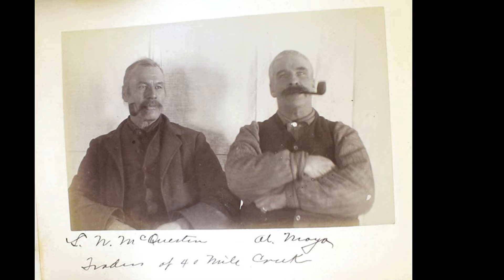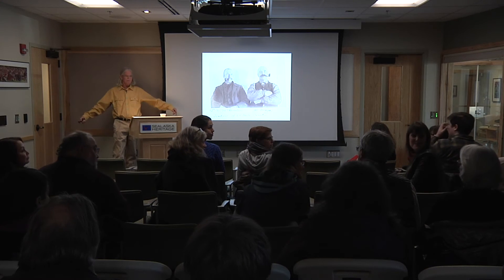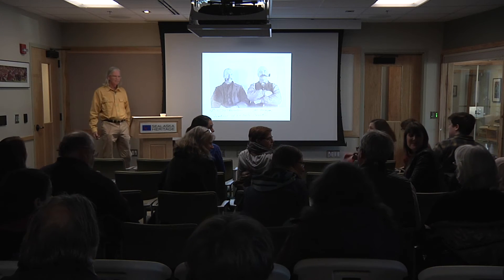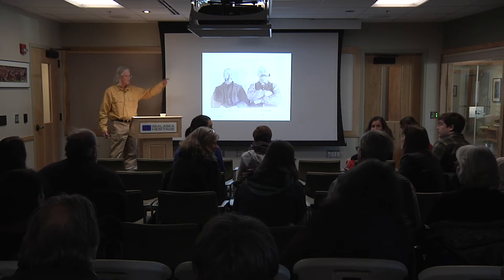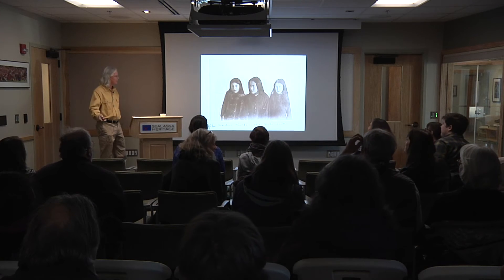This is McQuestin — the famous trader — McQuestin's camp at Forty Mile Creek where it comes into the Yukon. And here: Mayo — Al Mayo — he's got a town. And somebody in the audience said: he was my great grandpa. So it just goes on — there's your grandmother or something.